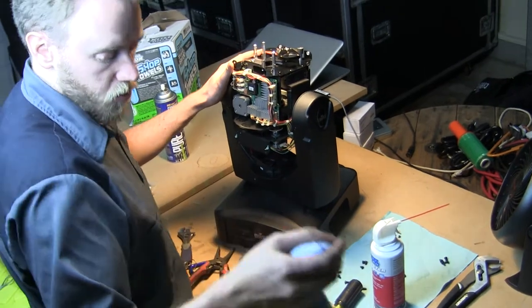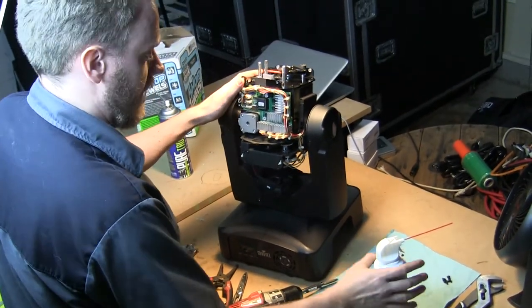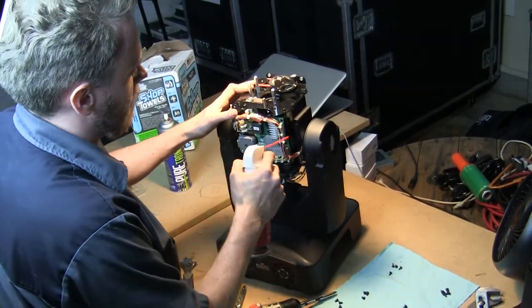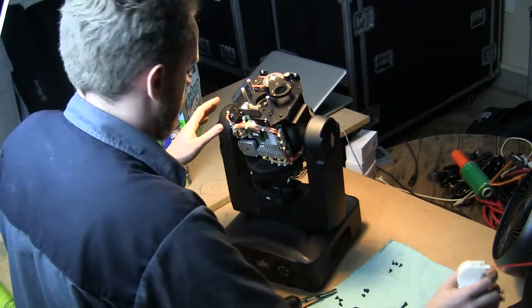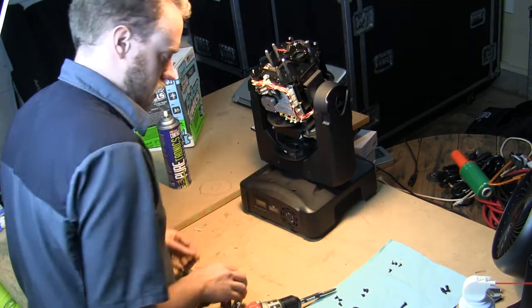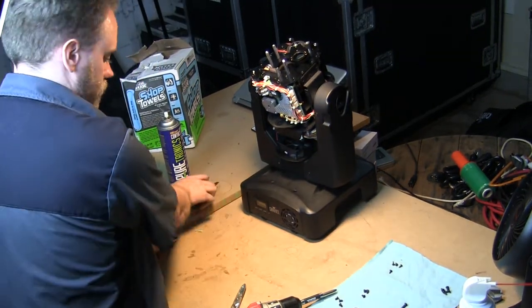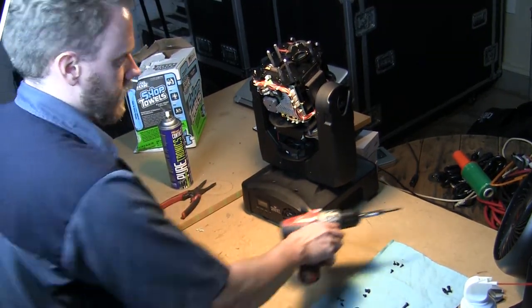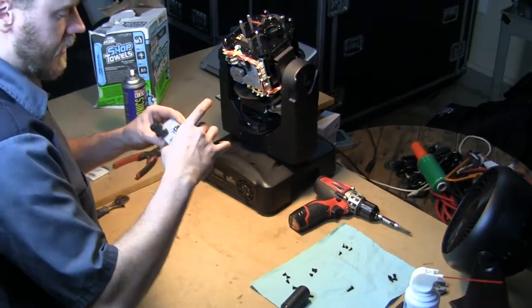Now if you want to get super more cleanliness by all means go ahead. For the most part, that's a fairly decent cleaning to get it done. Now we've got a clean fixture. We need to go ahead and put it to the side for the moment and we're going to go ahead and replace the diode on the lamp housing itself.